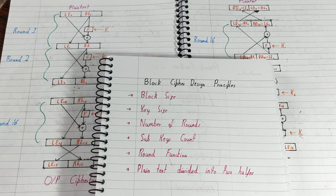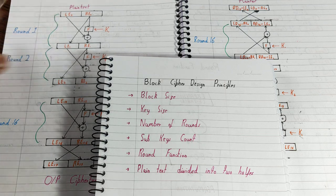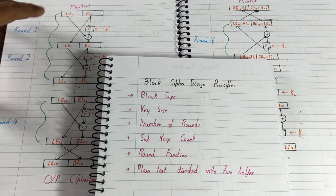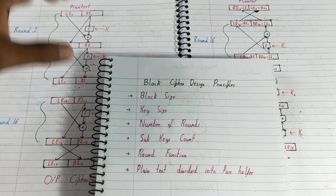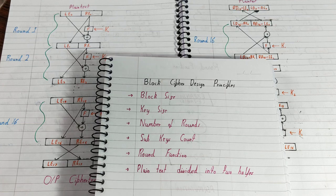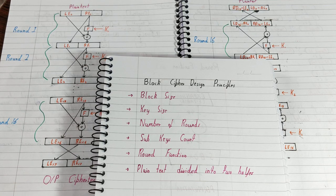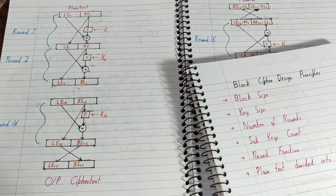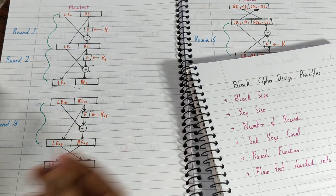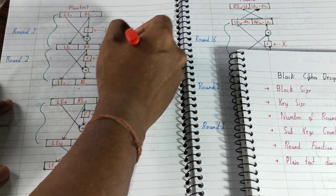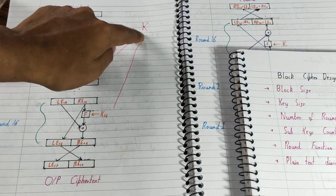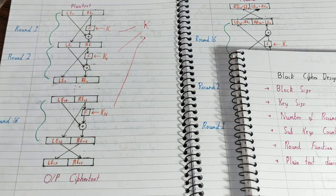The block size for the plaintext and the ciphertext will be the same. For example, if your plaintext is 64 bits, then the ciphertext generated will also be 64 bits — no change. The second design principle is key size. A separate key is used and from that key, sub-keys are generated. The key size is the same as the size of the plaintext. For example, if the plaintext is 64 bits, the key will also be 64 bits.